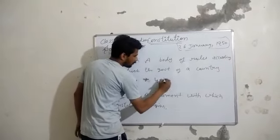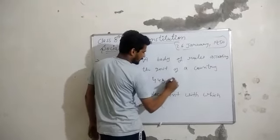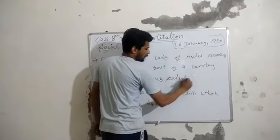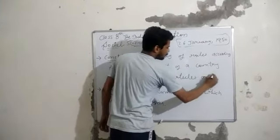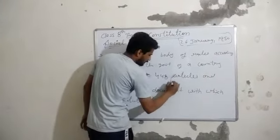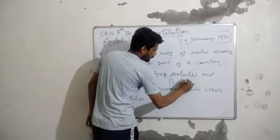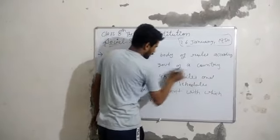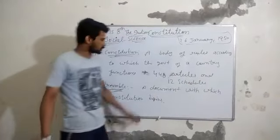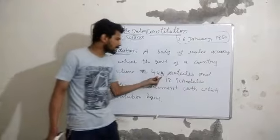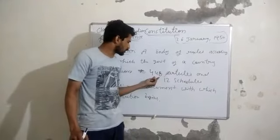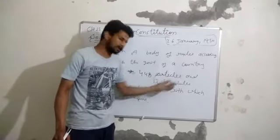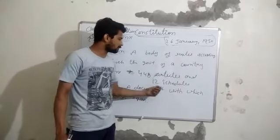In our Constitution we have 448 articles and 12 schedules.